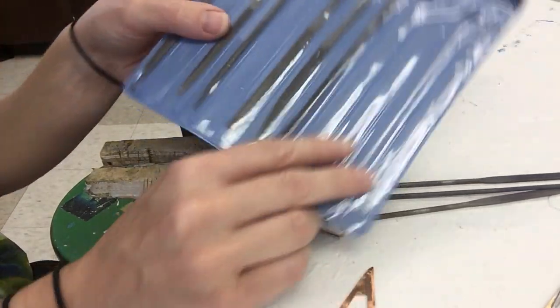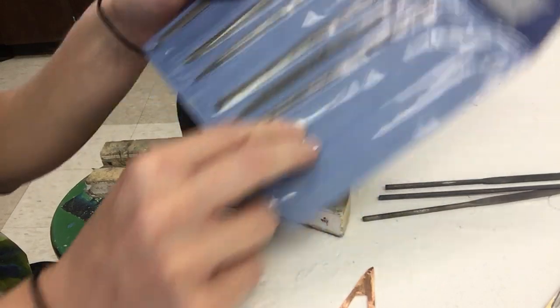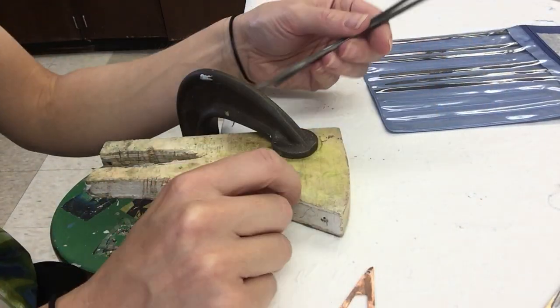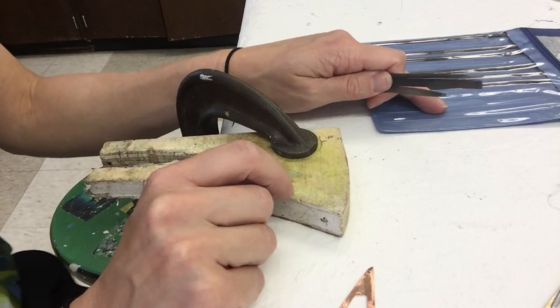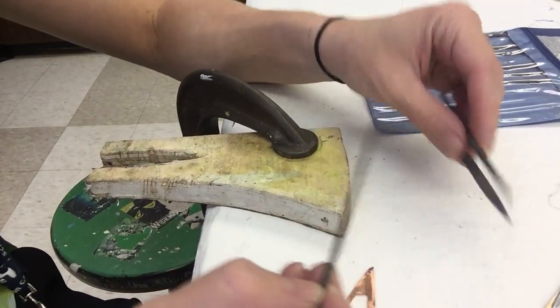So first of all, in your kit you have a set of files. Some of you have about four, some of you may have a few more. The reason you have a bunch of different ones is they have different shapes and they do slightly different things.